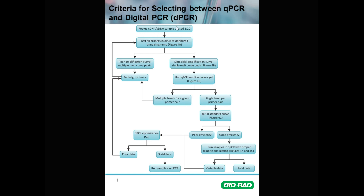This decision tree starts by validating primers with a pooled cDNA or genomic DNA sample. The selection of the pooled sample is very important and should be a representative sample from the experiment — most representatively, a pool of control and treatment groups such that the pool represents the average of the target quantities for all targets and the average of the contaminant levels.